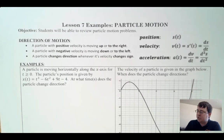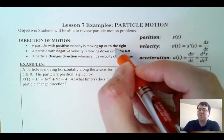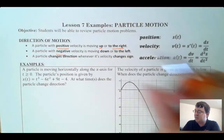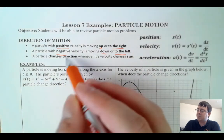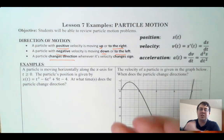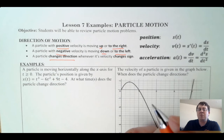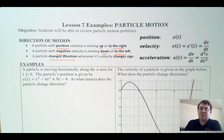First, let's go over direction of motion. A particle with positive velocity is moving up or to the right, depending on the problem. A particle with negative velocity is moving down or to the left. A particle changes direction whenever its velocity changes sign. This can happen any time velocity equals zero, because the particle has to stop in order to change direction — we look for where velocity changes from positive to negative or vice versa.